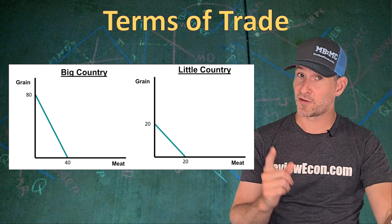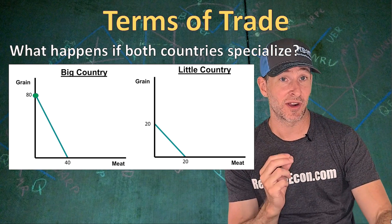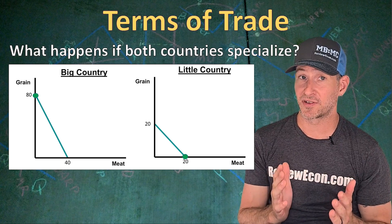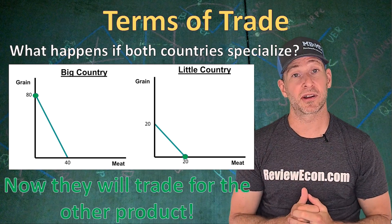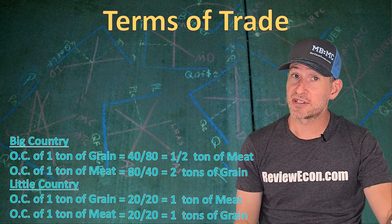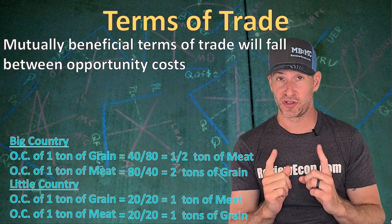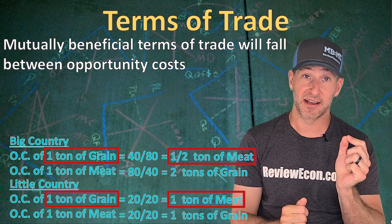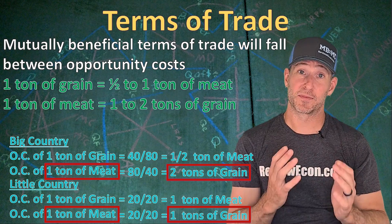If both countries specialize in the good for which they have the comparative advantage, Big Country produces 80 tons of grain and zero tons of meat, while Little Country produces 20 tons of meat and zero tons of grain. They then trade for the other product. Both countries negotiate terms of trade that are beneficial to them, and mutually beneficial terms fall between their two opportunity costs — for grain, between half a ton and one ton of meat; for meat, between one and two tons of grain.